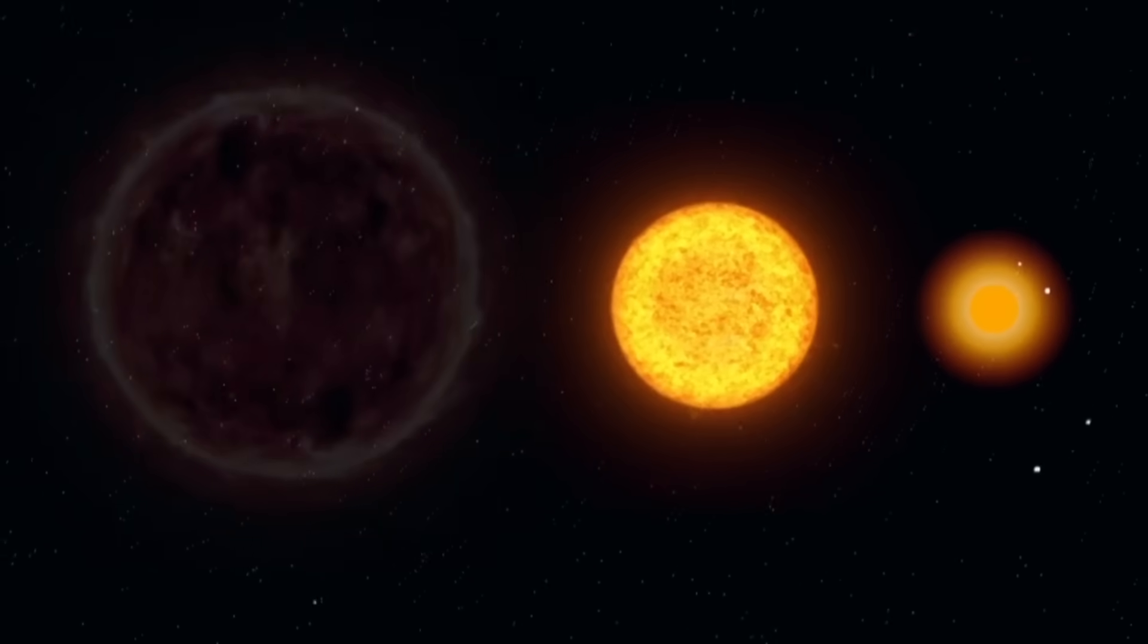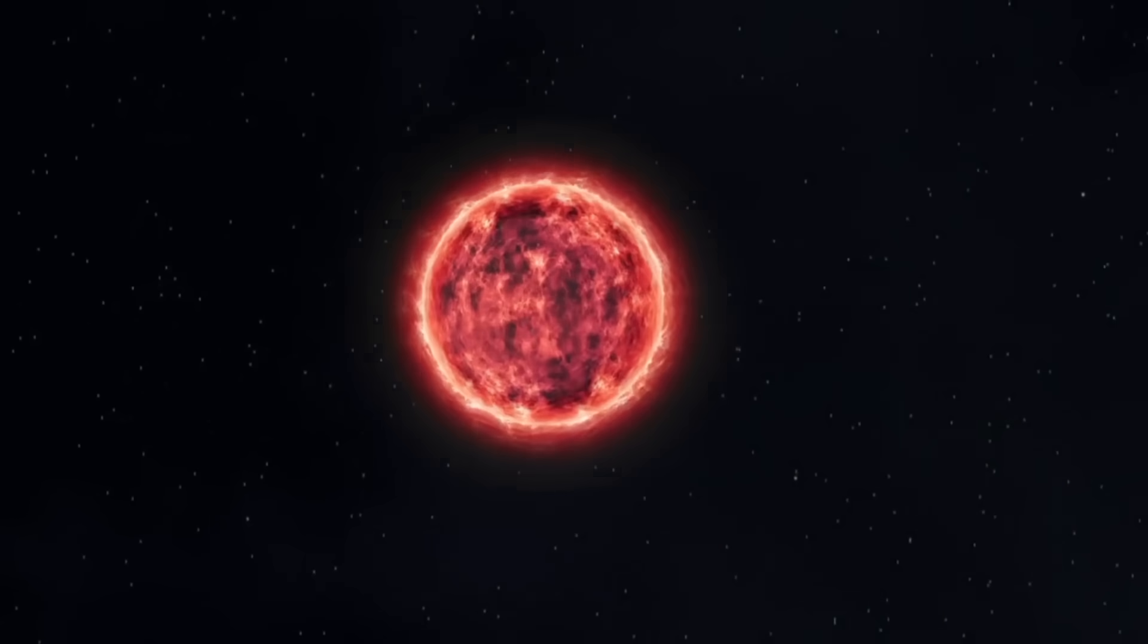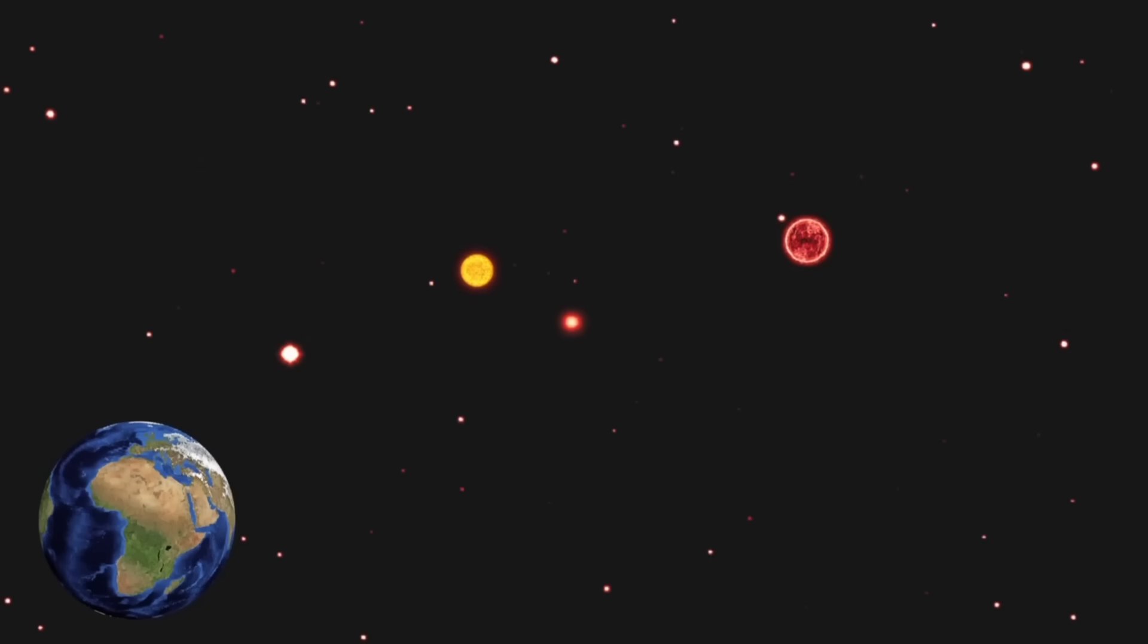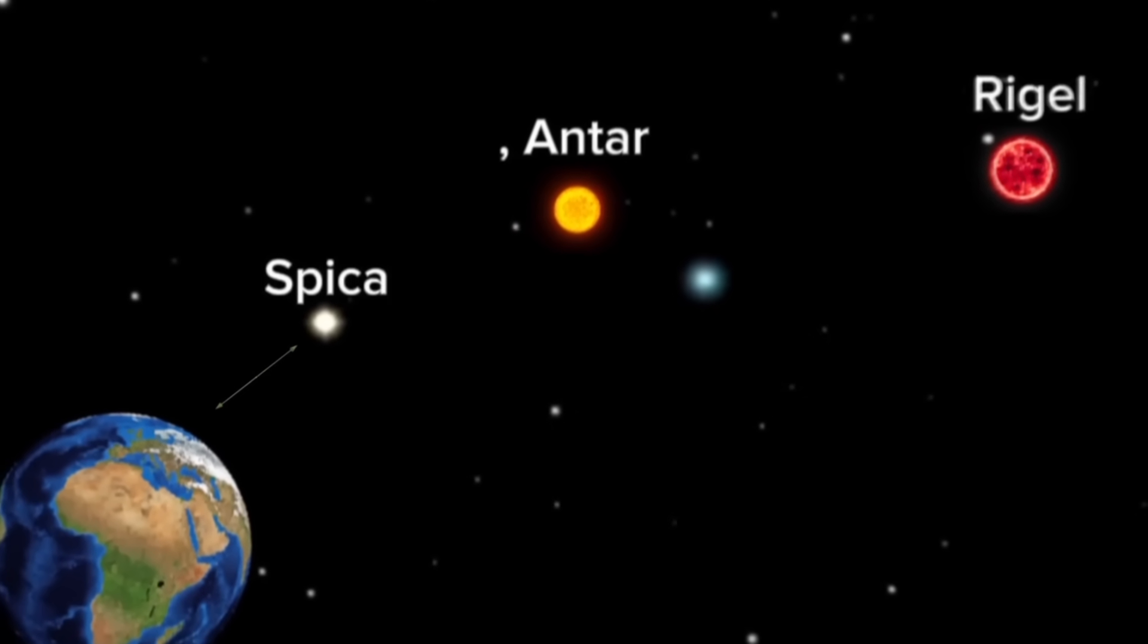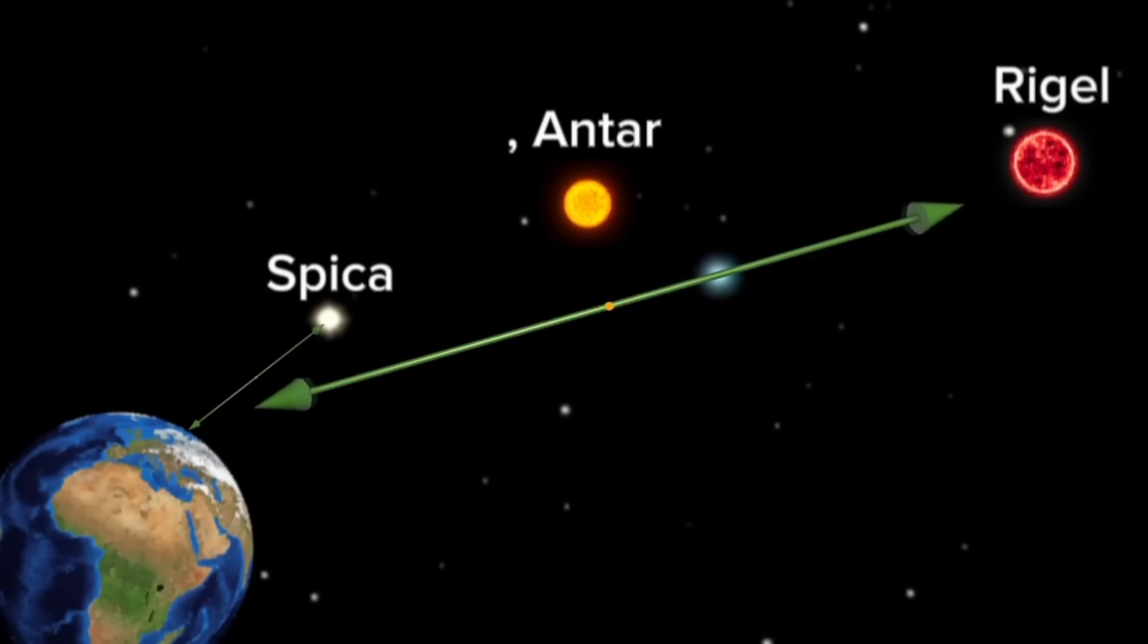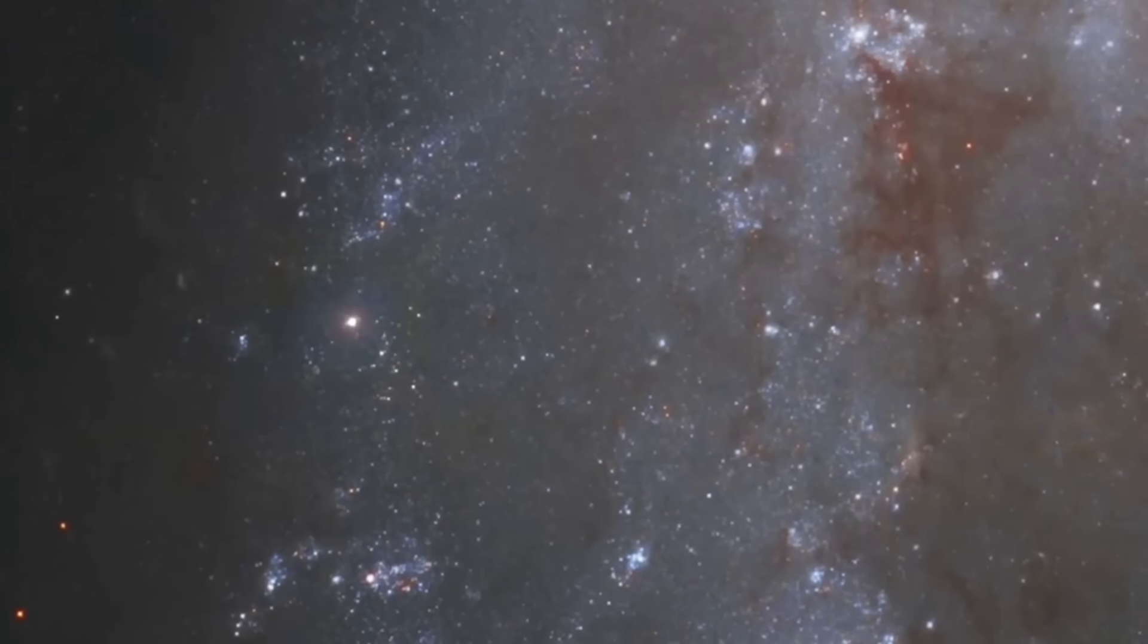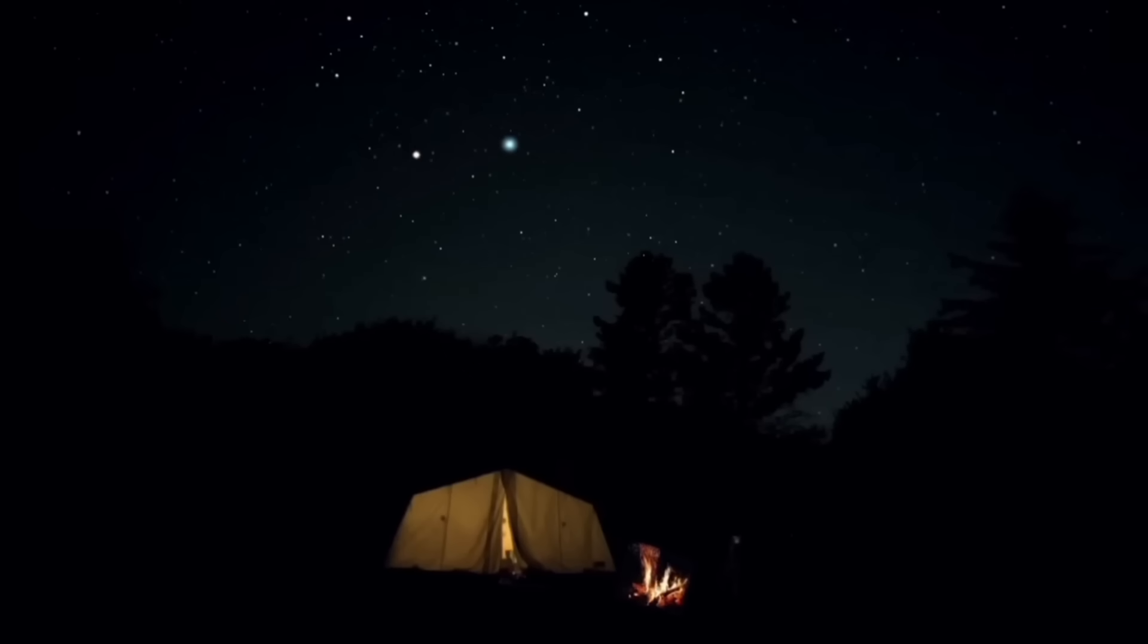But not all stars are like the sun. Some are much bigger, hotter, and more violent. These massive stars do end their lives in powerful explosions. And yes, a few of them are relatively close to Earth. Stars like Spica, Antares, and Rigel are all huge and old enough to potentially go supernova someday. However, even though they are considered nearby in astronomical terms, they're still hundreds of light-years away from us, which means Earth is not in any real danger if they explode. But the light from their explosions would be visible from Earth, so bright it might outshine the moon for days or even weeks.